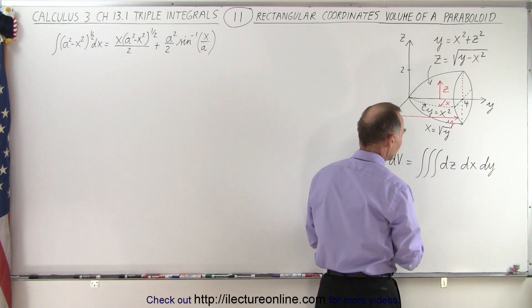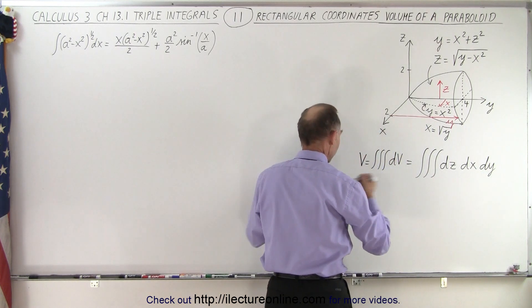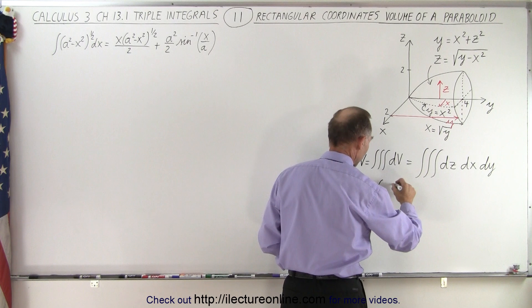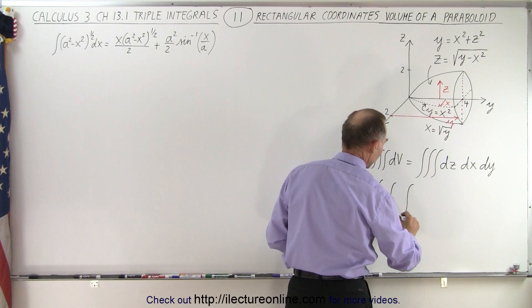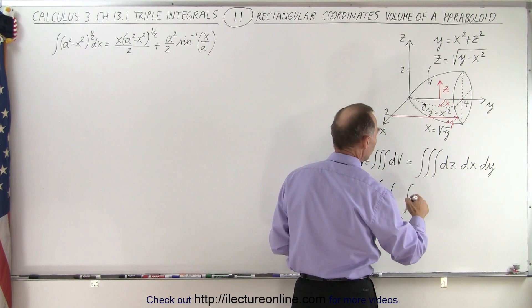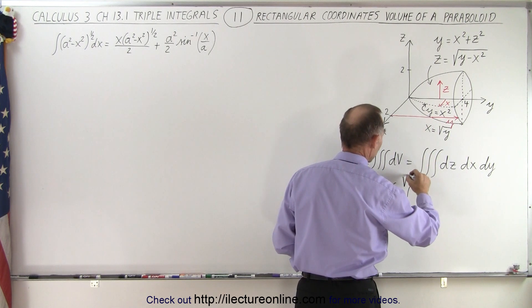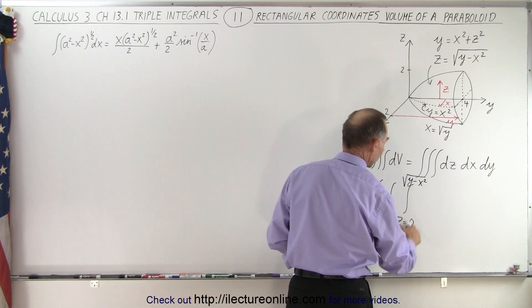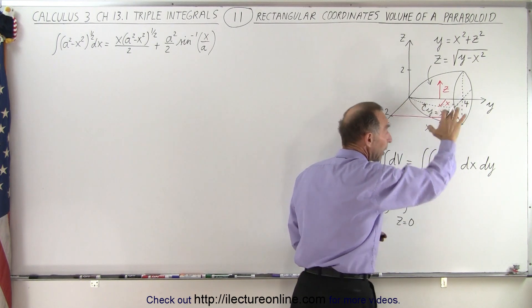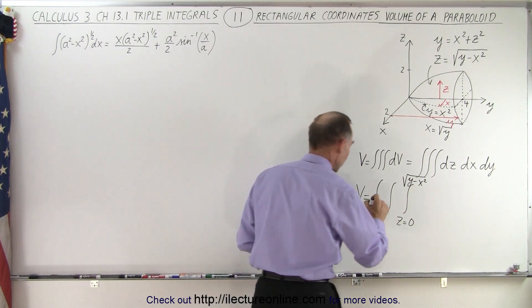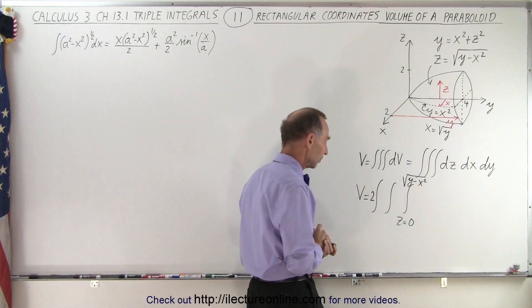So my limits are going to be written as follows. The z limits are going to start from zero to the upper limit, which is the square root of y minus x squared. But going from zero to that means I'm ignoring the bottom half, so I simply have to double that by symmetry and put a 2 in front.